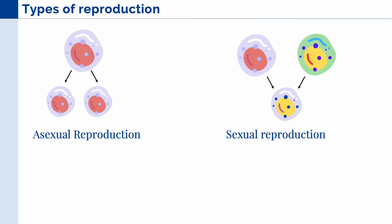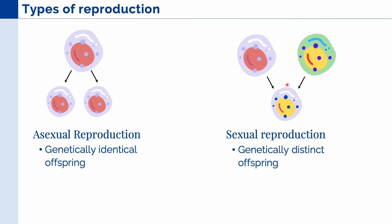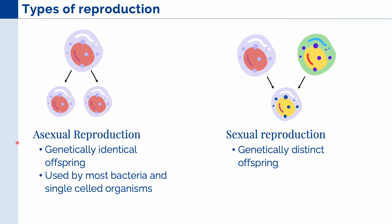Let's first discuss the two types of reproduction. The first one is called asexual reproduction, and this is where one cell produces two genetically identical offspring. The second type is called sexual reproduction, and here we have two distinct cells that produce genetically distinct offspring. Asexual reproduction is used by most bacteria and single-celled organisms, while sexual reproduction is used by higher organisms like plants and animals. In some rare instances, there are also some single-celled organisms that can utilize sexual reproduction.